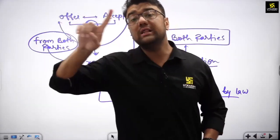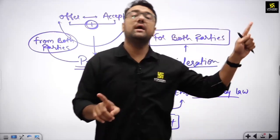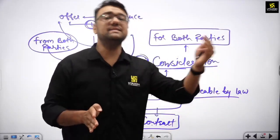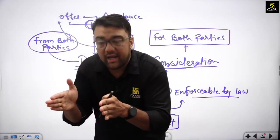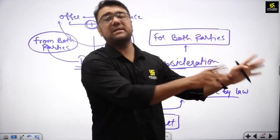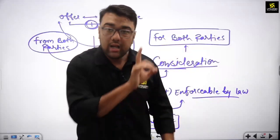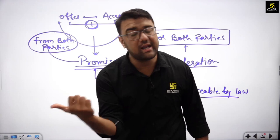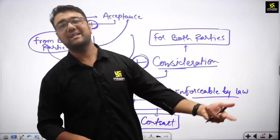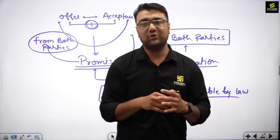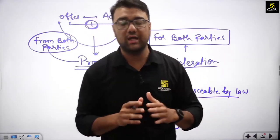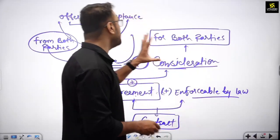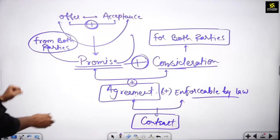And when a particular document cannot cross the criteria of agreement, it cannot become a contract. That is why we say: all contracts are considered as a valid agreement — whoever came in the category of contract, that agreement was 100% valid. But it is not necessary that all agreements become finalized into a contract, because there are many things — void agreements also exist, voidable agreements also exist.